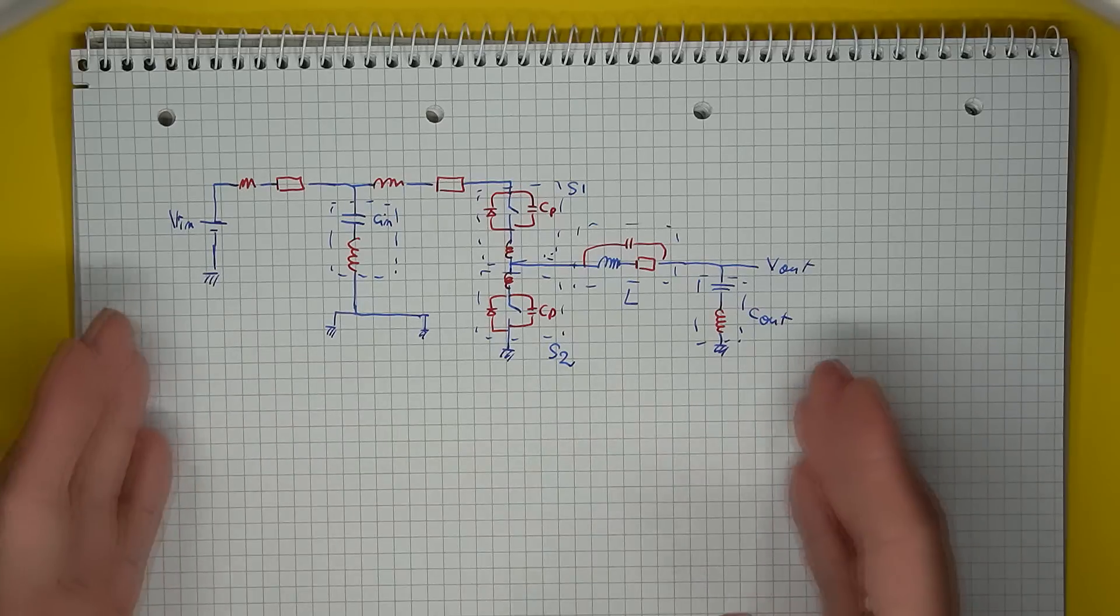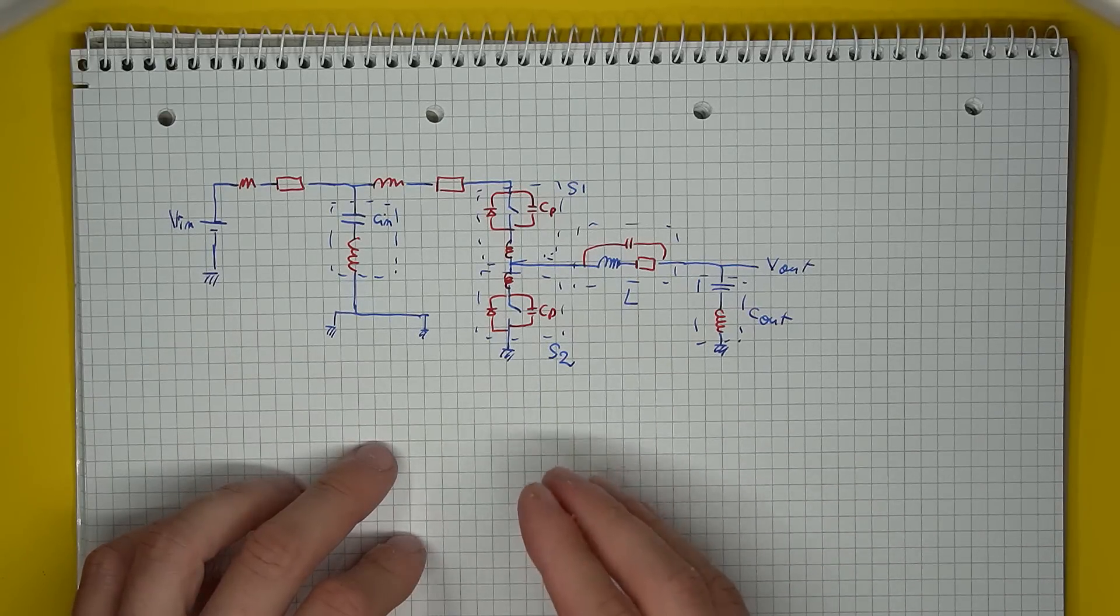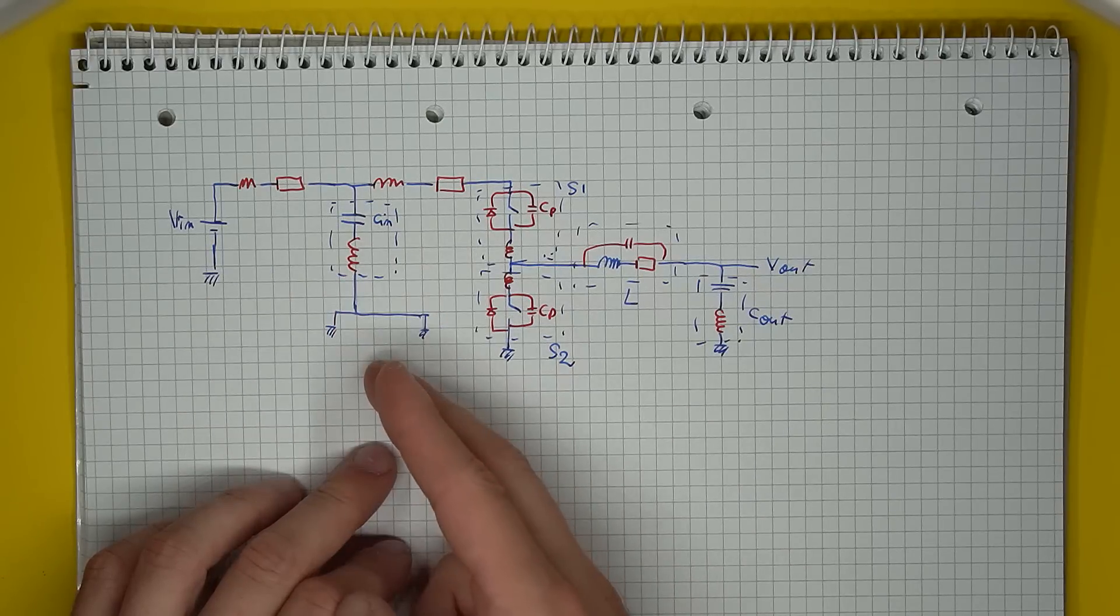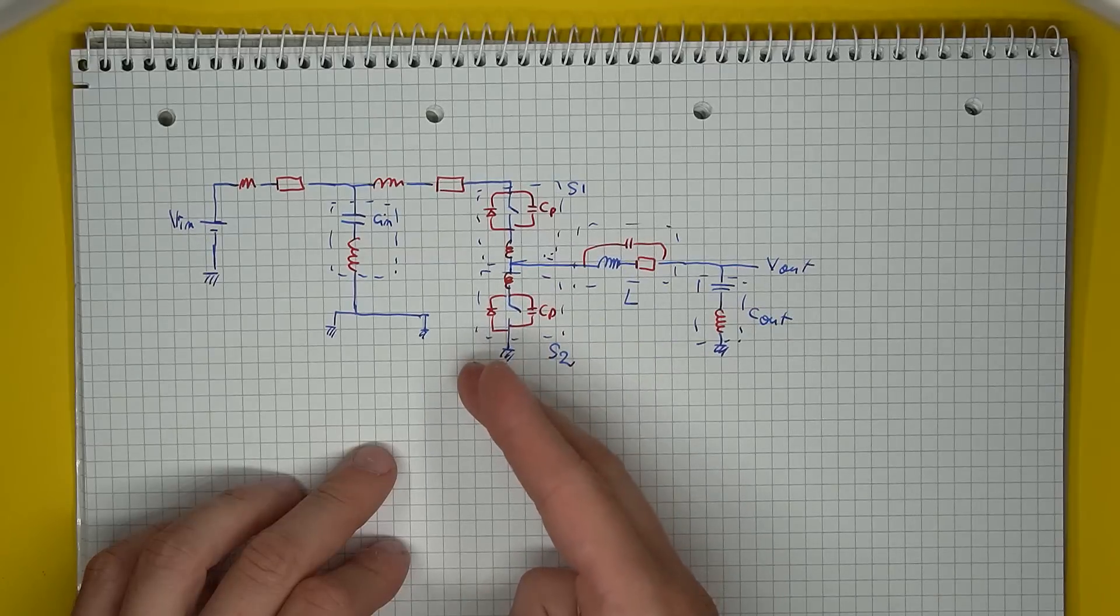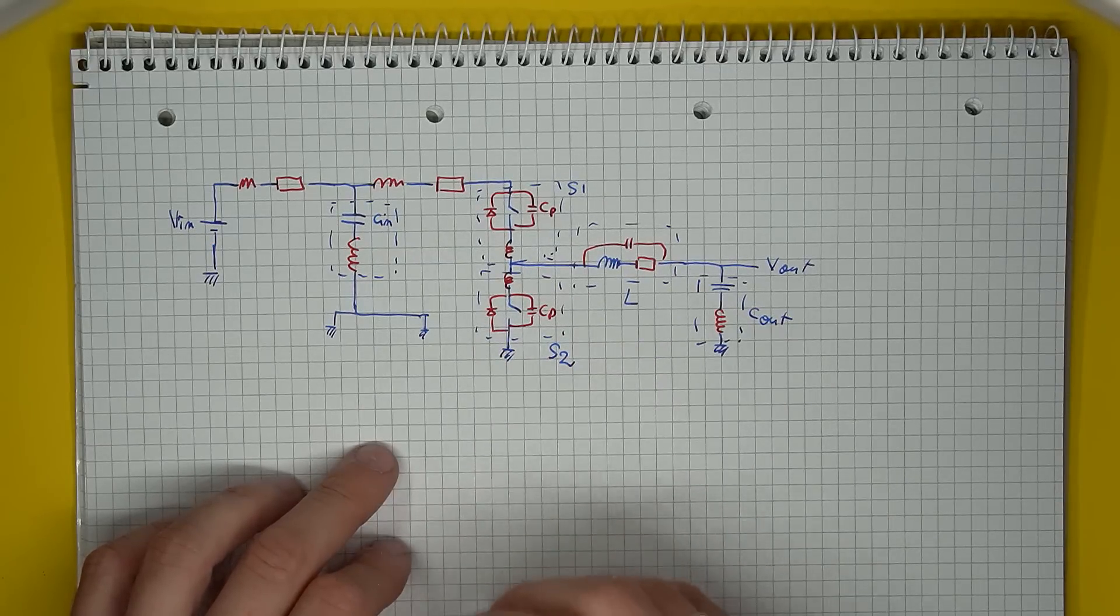Now all of the components in the diagram have parasitics, but our main area of interest is our hot loop, the input decoupling capacitor to which the two switches are connected.